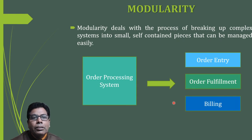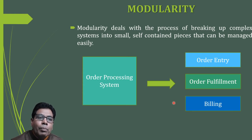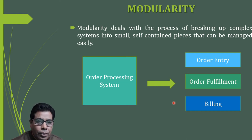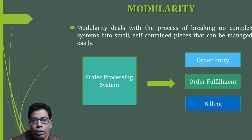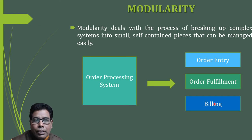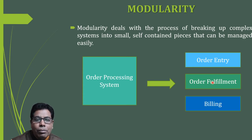The next concept is modularity. Modularity deals with the process of breaking up a complex system into small self-contained pieces that can be managed easily. For example, an order processing system is a single system, but we can break it down into three modules: order entry, order fulfillment, and billing. Breaking up a complex system into small self-contained pieces is what we call modular, and this is achieved with the help of objects and classes.